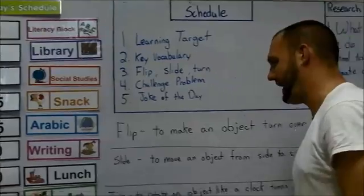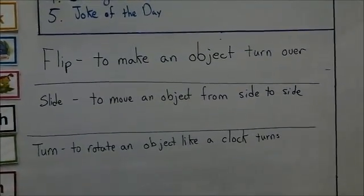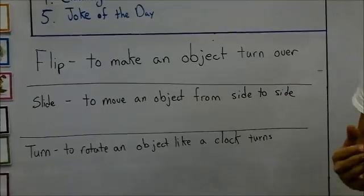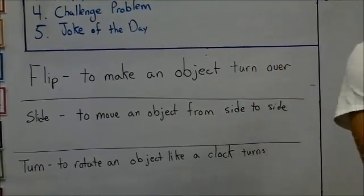Let's take a look at our vocabulary now, key vocabulary. The first one is flip. This is to make an object turn over. To make an object turn over.